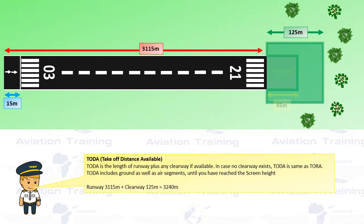Takeoff Distance Available is the length of the runway plus any clearway if available. If no clearway exists, then TODA will be the same as TORA. TODA includes the ground as well as the air segments until you have reached your screen height.